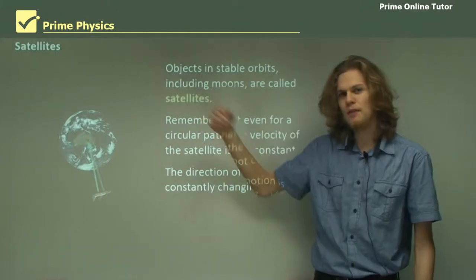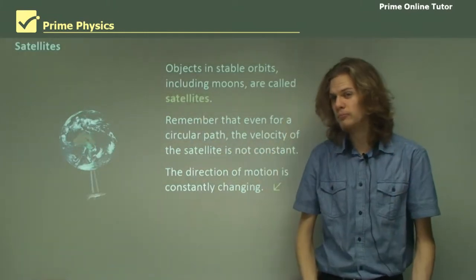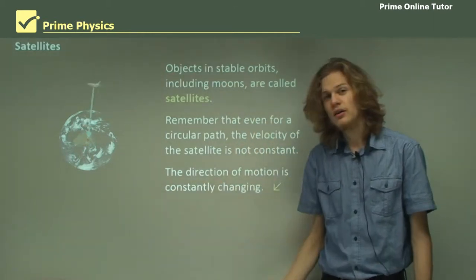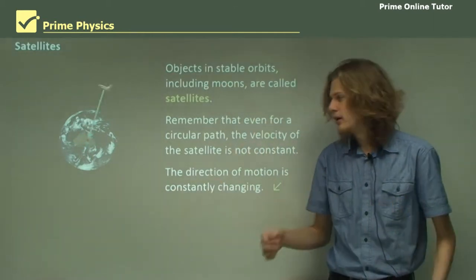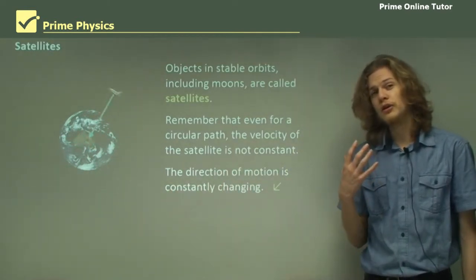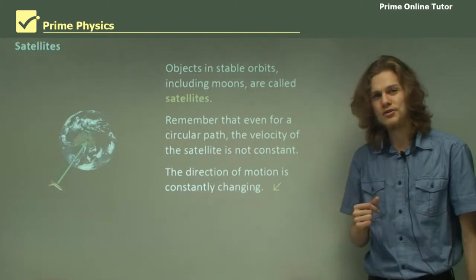When we're at the top of this diagram the acceleration will be downward and velocity will be to the left. When we're at the bottom the acceleration will be upward and the velocity will be to the right. However, as long as we're moving in circular motion the speed will remain the same.